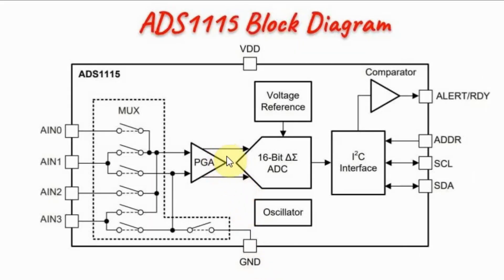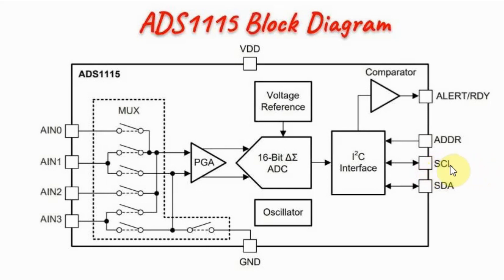The analog signal is then fed into the analog-to-digital converter that will give a 16-bit result. The I2C interface converts the result into serial data that is transmitted over the I2C bus to the requesting microcontroller.